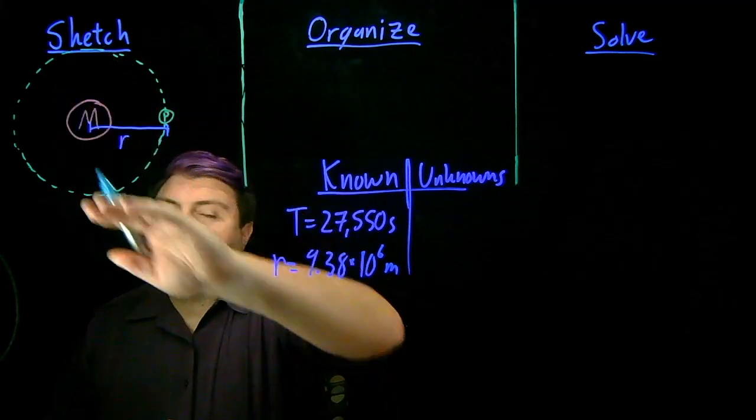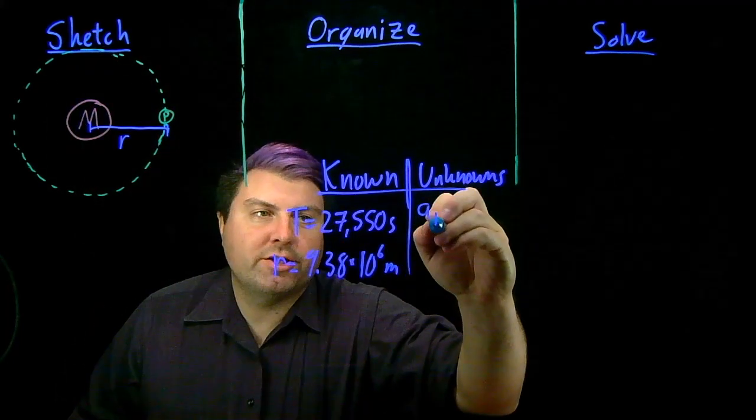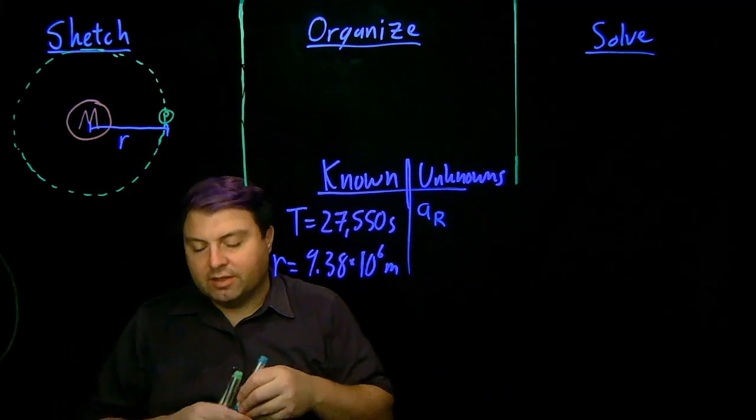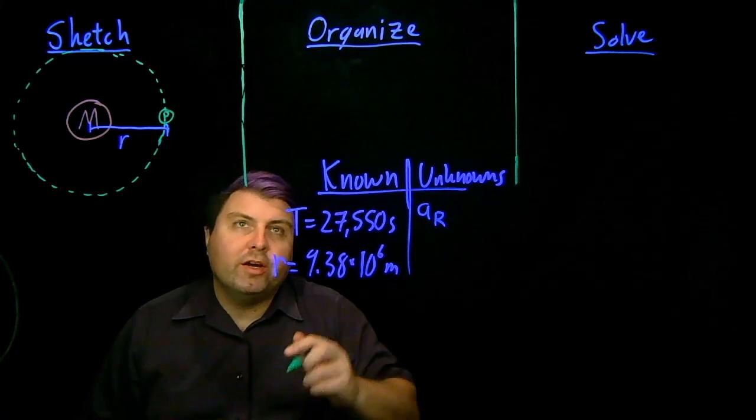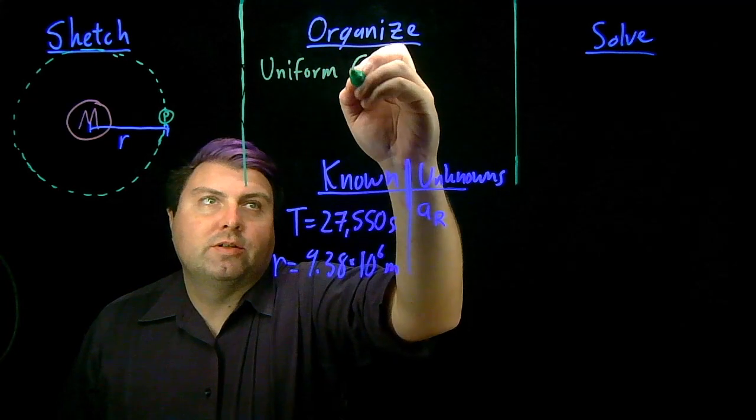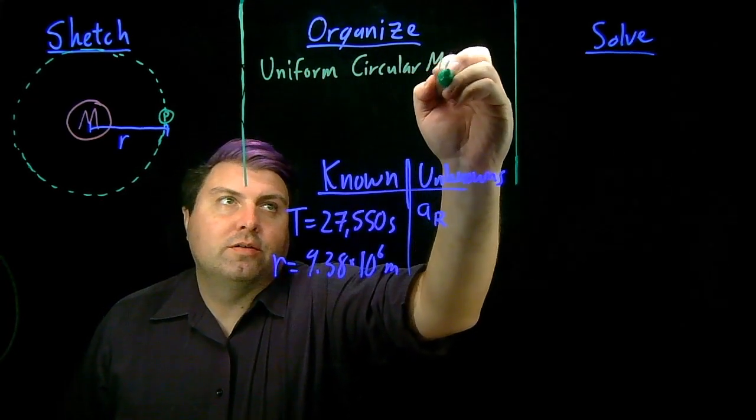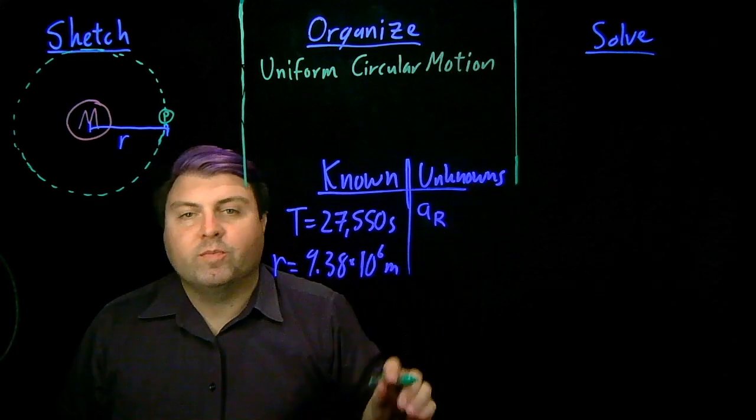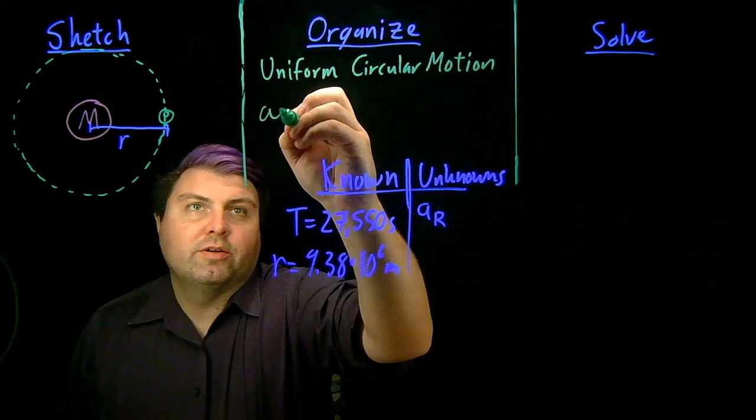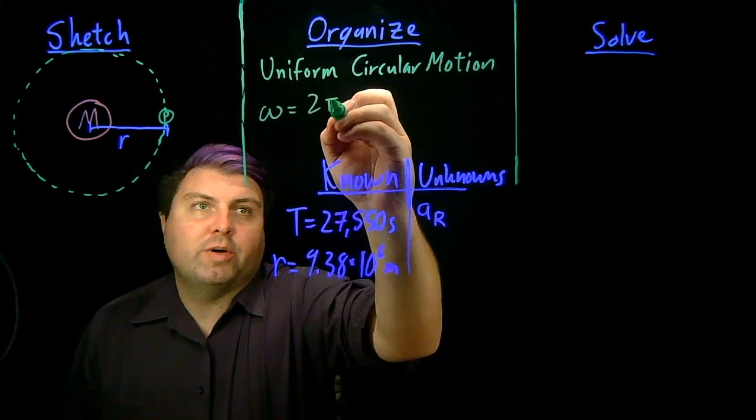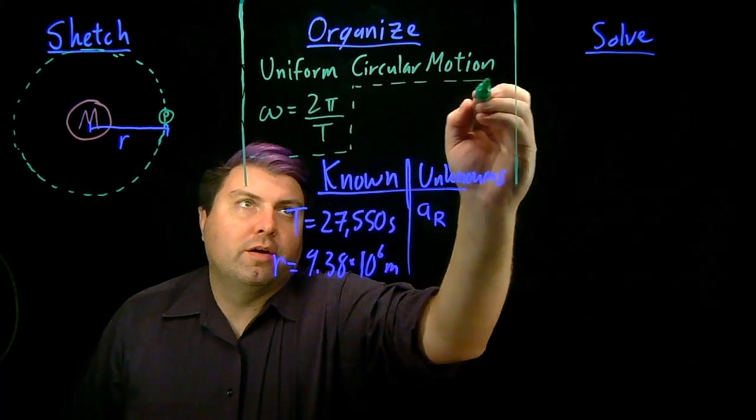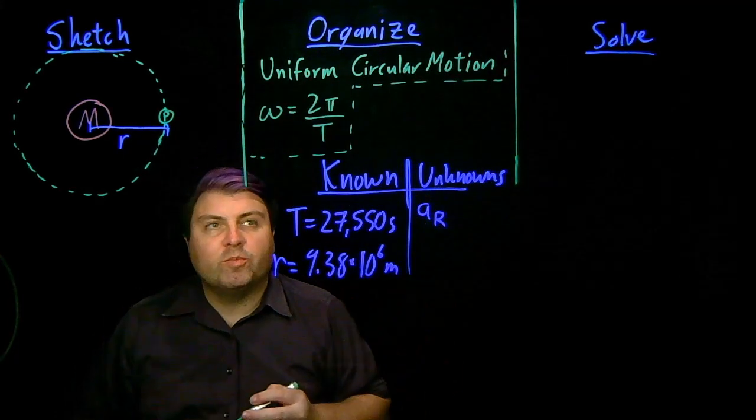What we want to know to answer is what is the acceleration needed to keep Phobos moving around Mars in this way? So as we look at our organized step, we can call this uniform circular motion. If it's uniform circular motion, then we get the relationship omega equals 2 pi over the period.